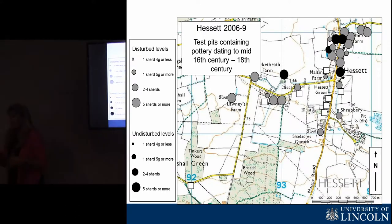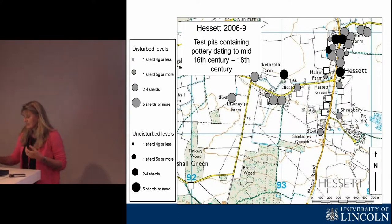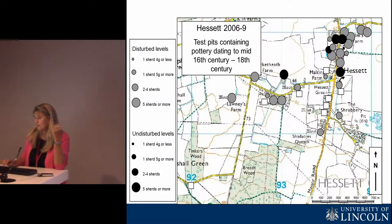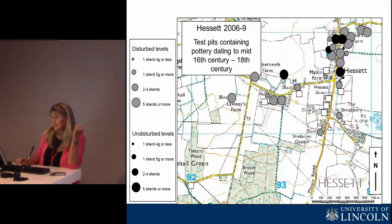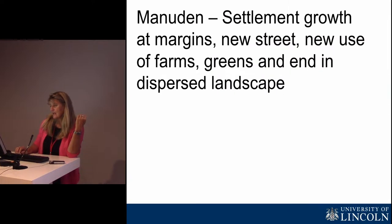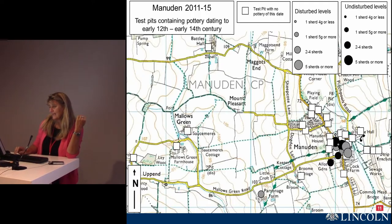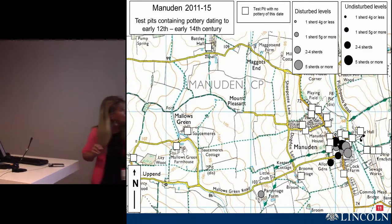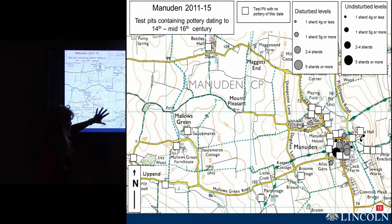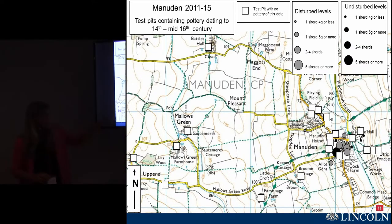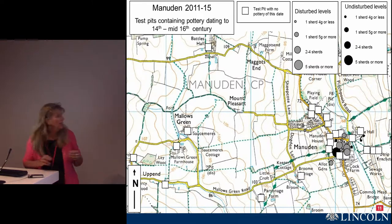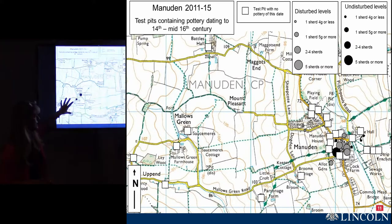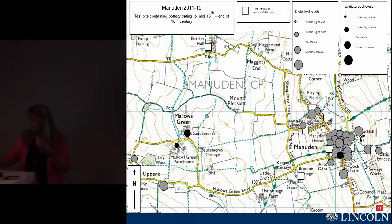Similarly at Hesset: a small Anglo-Saxon nucleation, growth in the high medieval period with some outlying settlements, then contraction. In the post-medieval period we see dispersed settlements extending into the heavily wooded landscape — these feel like clearance or re-clearance settlements, reoccupying those areas. At Manudon we see a similar picture: really nothing turning up from any of the outlying sites — the greens and ends on the edge — until we get into the early post-medieval period.